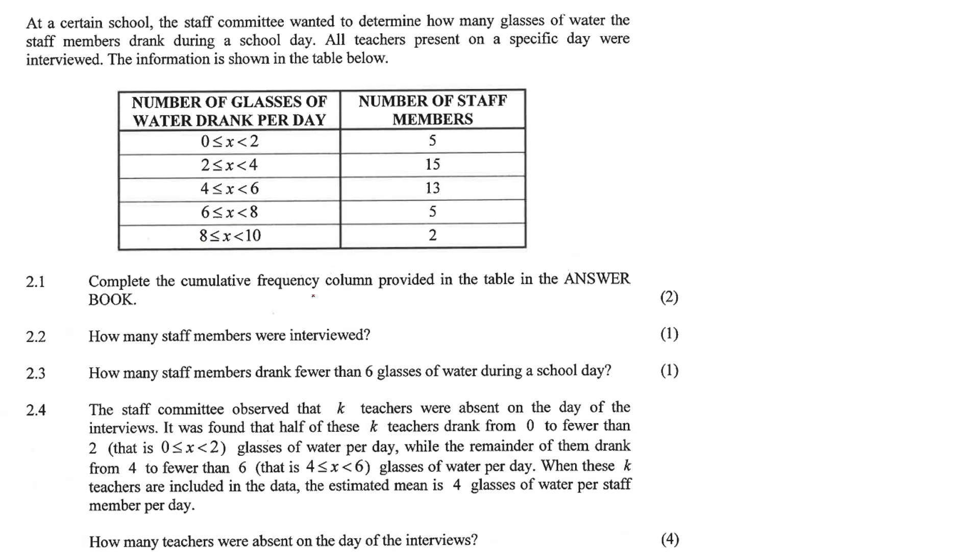Complete the cumulative frequency. Okay, so a cumulative frequency, they'll give you a table in your exam where it'll just say cumulative. Cumulative just means total. So up till this point, there's only been five staff members. Up till this point, there's been 20 staff members because five plus 15 is 20.